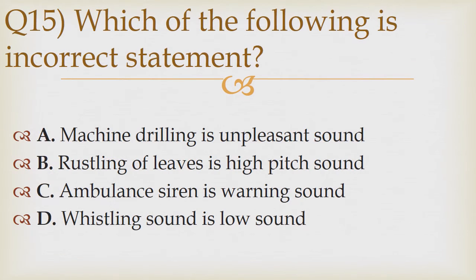Question number 15. Which of the following is an incorrect statement? Option A: Machine grilling is an unpleasant sound. Option B: Rustling of leaves is a high-pitched sound. Option C: Ambulance siren is a warning sound. Option D: Whistling sound is a low sound. The correct answer is Option B — rustling of leaves is a high-pitched sound.